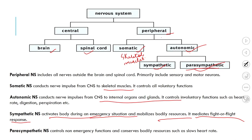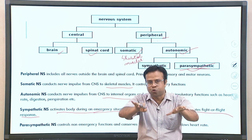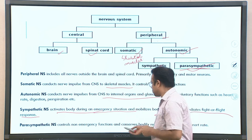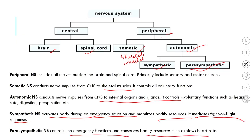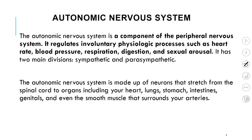The parasympathetic nervous system helps the body cool down and return to normal. It controls non-emergency functions and conserves body resources such as slowing the heartbeat. Sympathetic nervous system increases heart rate; parasympathetic decreases it. Both work in coordination — without the parasympathetic, the body would not be able to return to normal. Almost all emotions are associated with activation of the sympathetic nervous system, which activates and prepares the body to deal with the situation.